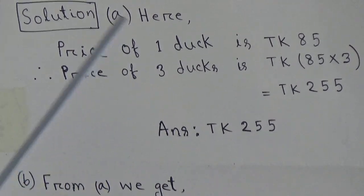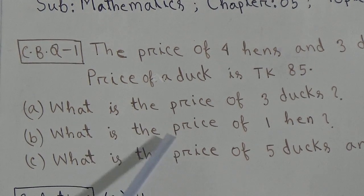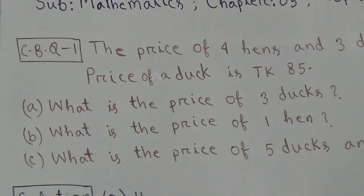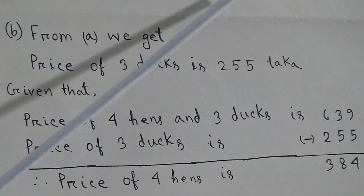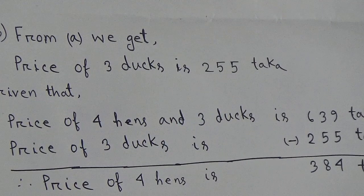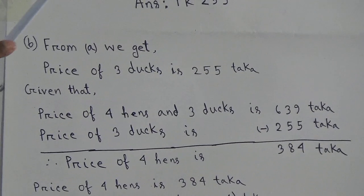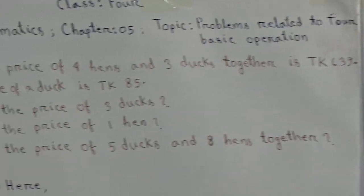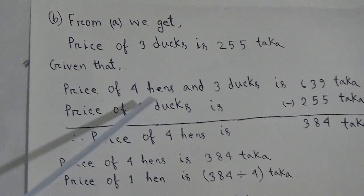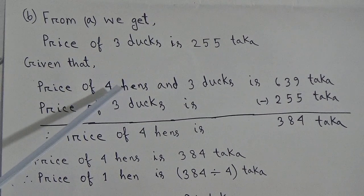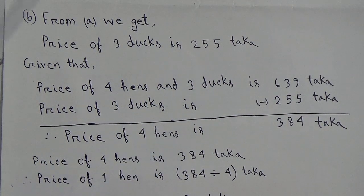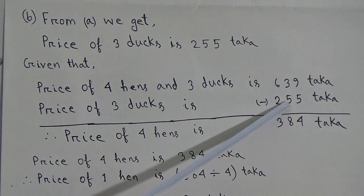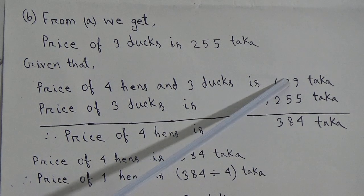Now we will solve question B: What is the price of one hen? From part A, we get the price of three ducks is TK255. Now, it is given that the price of four hens and three ducks together is TK639. If we subtract the price of three ducks from the price of four hens and three ducks, then we get the price of four hens. That means we have to subtract 255 from 639.